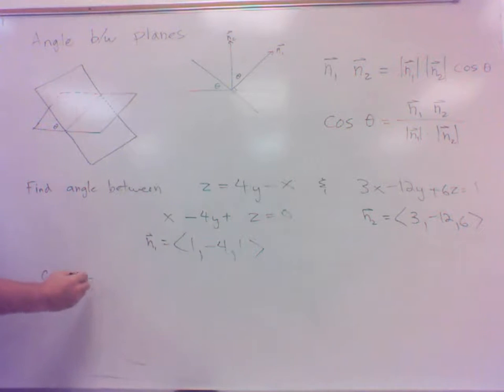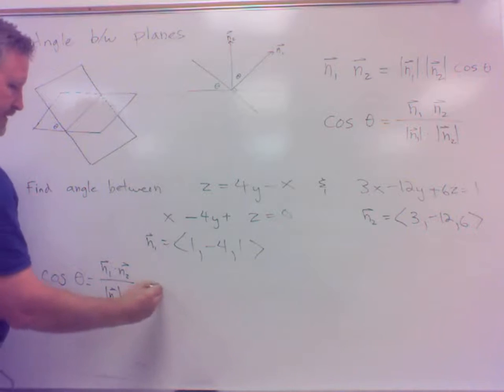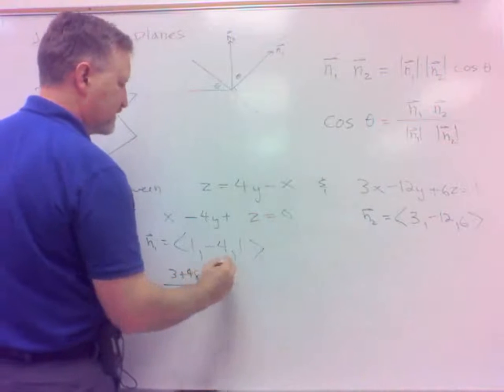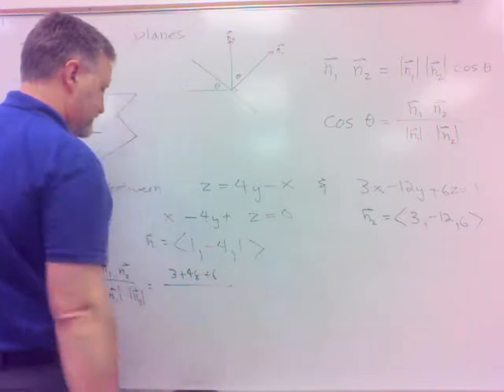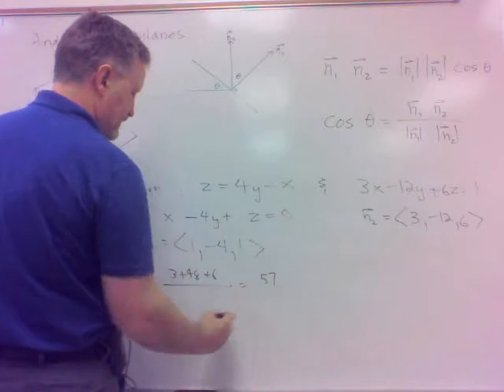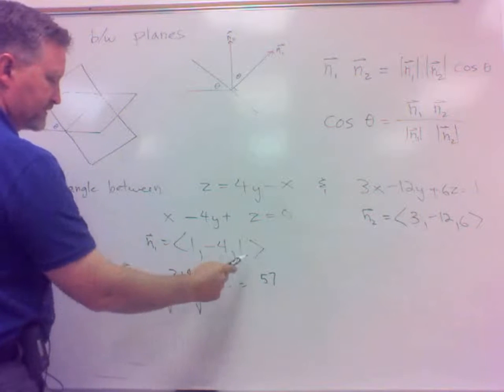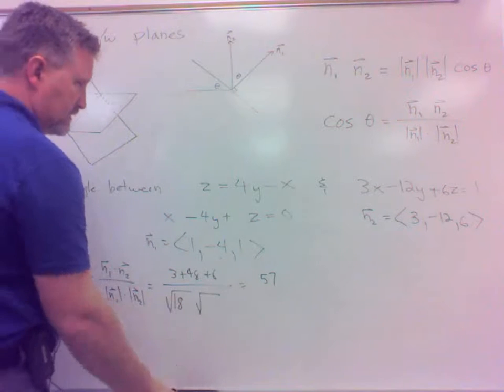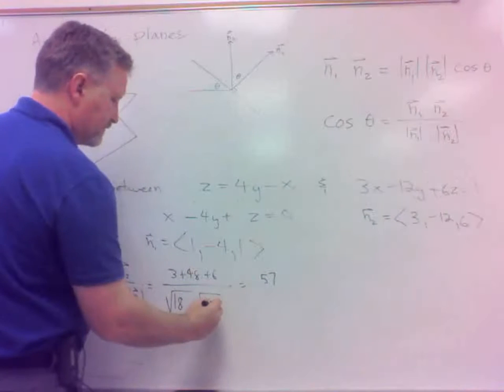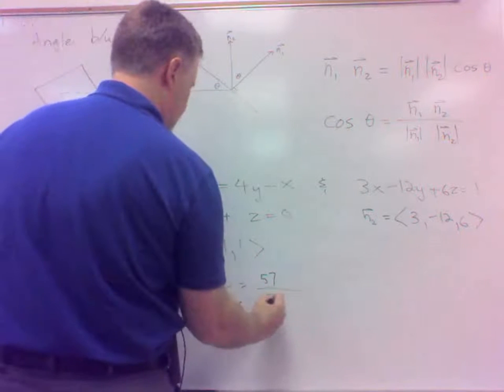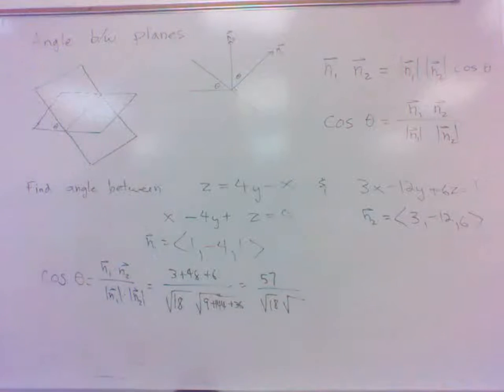Well, the cosine of the angle then between them, do the dot product by the magnitudes product. So the dot product, 3 times 1 plus 48, negative 4 times negative 12, 1 times 6 is 6, so it would be 57 over the square root of n1's magnitude. So that would be 1 plus 16 plus 1, 18, and that's 9, 144, and 36 square those. So it's the square root of 18 times the square root of 189.